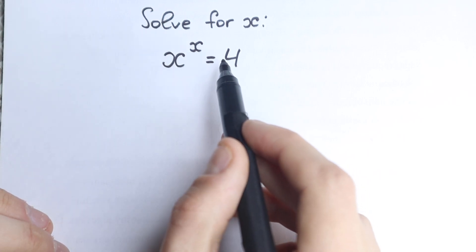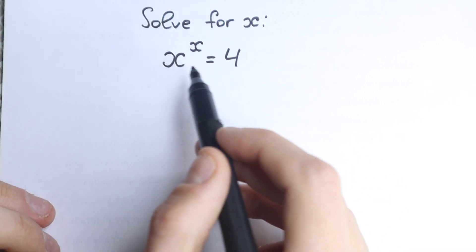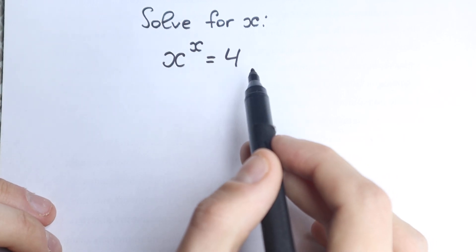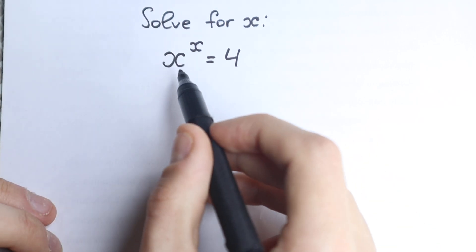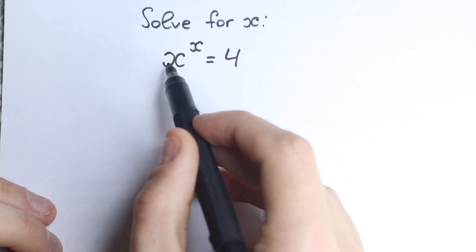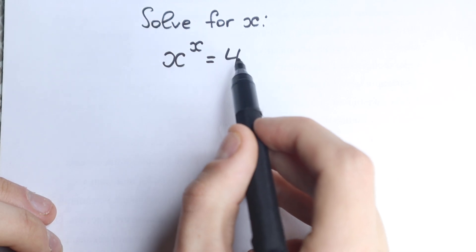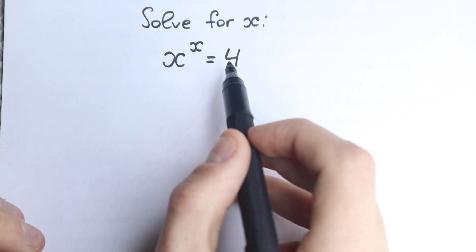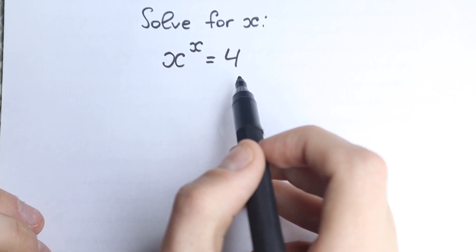First of all, we have x to the power x, and forget the inspection method right here. Let's try to solve it step by step, let's try to think in another way. Right here we have x to the power x — this is like a base and exponent — and this is like a constant on the right-hand side. It looks like an easy question, but we need to know two really interesting tricks.